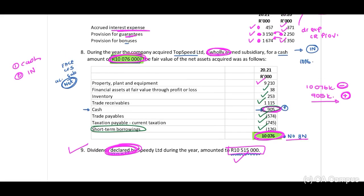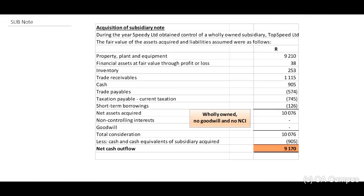They've already provided this information to you — you just need to transfer these amounts. It's pretty straightforward: transfer these amounts to your note. So this is our note: 'Acquisition of subsidiary — during the year, Speedy Limited obtained control of a wholly owned subsidiary, Top Speed.' I'll also indicate that it has been consolidated.